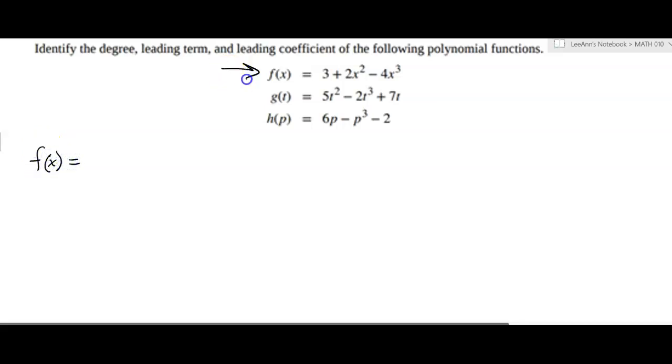So f of x, looking at that one, it looks like it should go negative 4x cubed plus 2x squared plus 3. So you're putting those exponents in order from largest to smallest. So the degree is 3, leading term is negative 4x cubed, and the leading coefficient is negative 4.